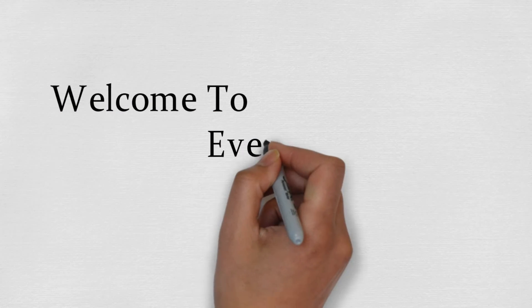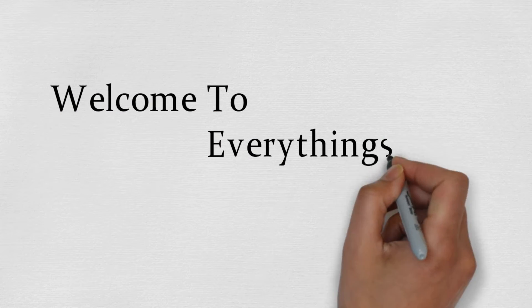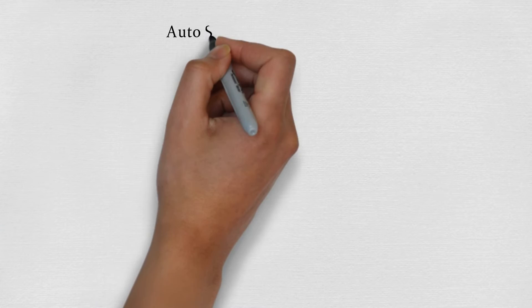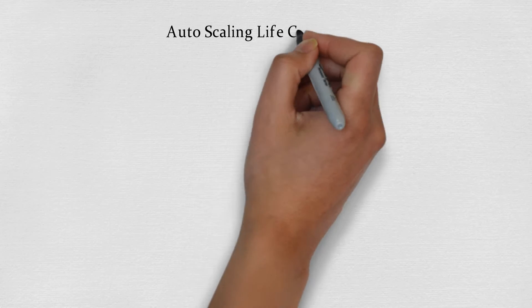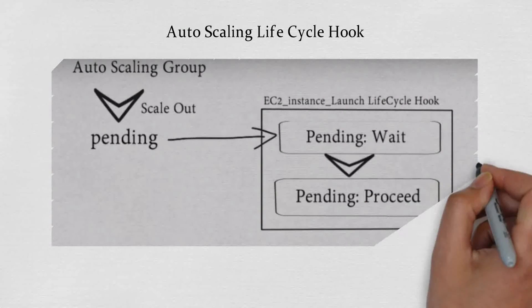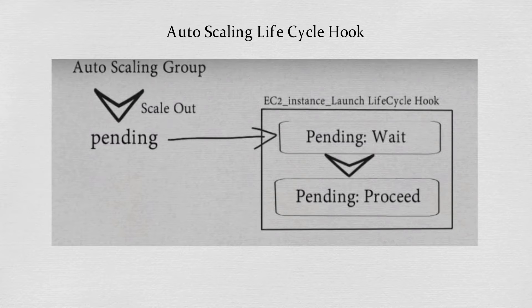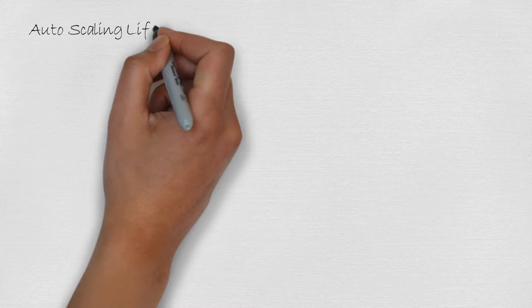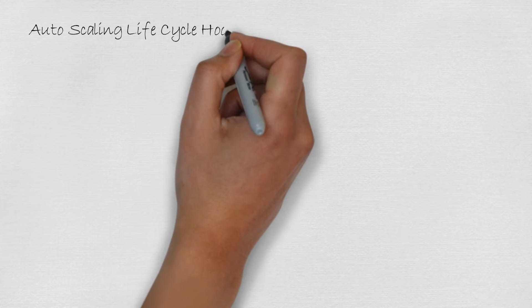Welcome to Everything Cloud. In the previous video we have seen the lifecycle for an instance — how the instance launches, how it proceeds in service, out of service, or standby. In this video we are going to discuss about lifecycle hooks. This video is a continuation of the previous video. If you haven't seen the last video, please visit it where you can find the lifecycle of an instance. I will provide the link for that.